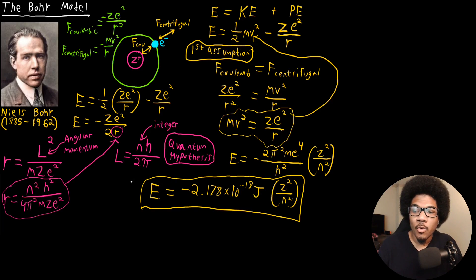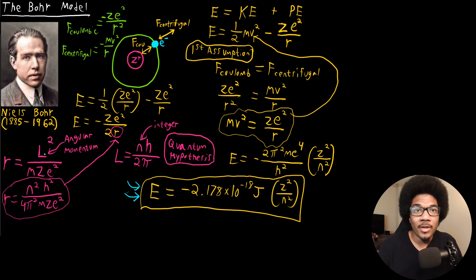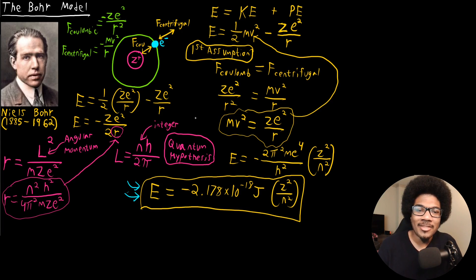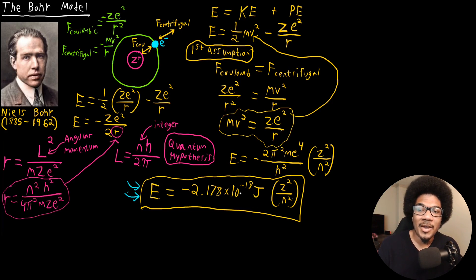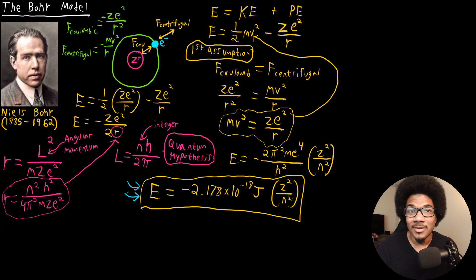That's a quick derivation of the Bohr model. There are a few details skipped here — you can find more detailed derivations online if you want to know more about the definition of angular momentum or the quantum hypothesis. But this gives you the physical underpinnings you need to understand the equation without getting too lost in the weeds.